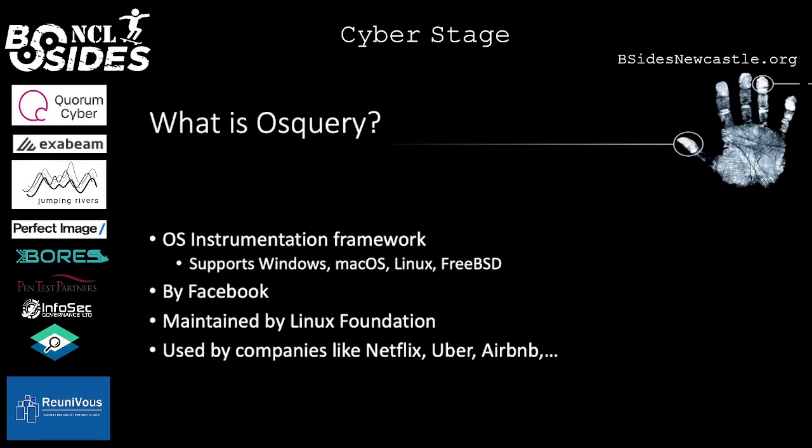OSQuery is used by quite a lot of big companies like Netflix, Uber, and Airbnb to give them a better view of the state of their infrastructure across the globe.